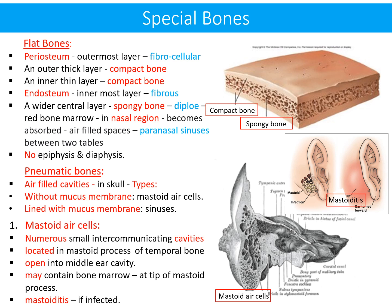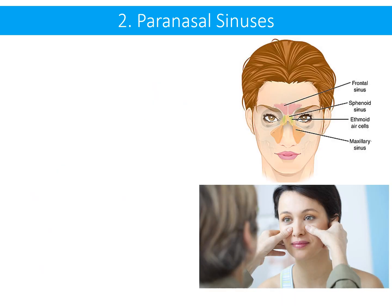The second group is pneumatic bones — bones with air-filled cavities present in the skull. There are two types: cavities without mucous lining, and cavities with mucous membrane lining. The first group, without mucous membrane lining, is represented by mastoid air cells — numerous small intercommunicating cavities located in the mastoid process of the temporal bone, opening into the middle ear cavity. They may contain bone marrow, especially at the tip of the mastoid process. If these air cells are infected, the condition is named mastoiditis.